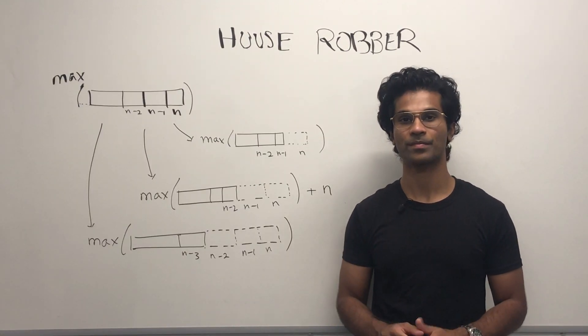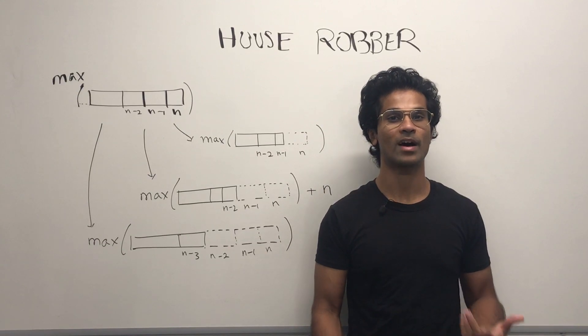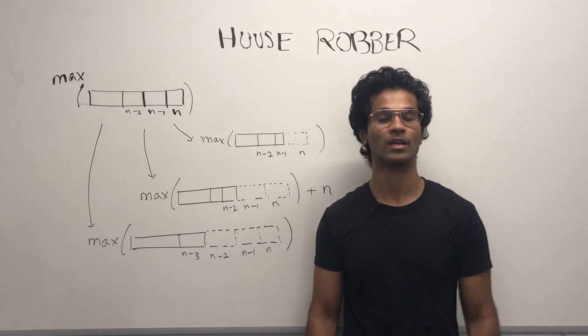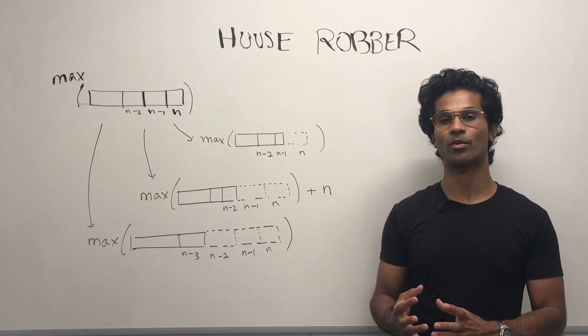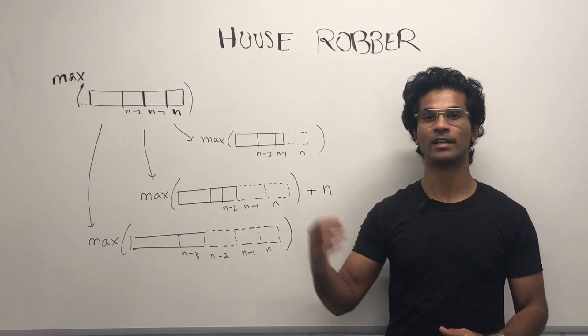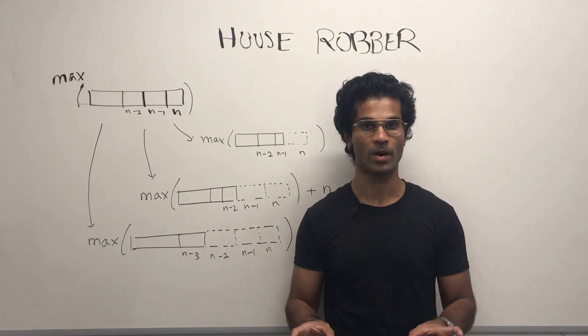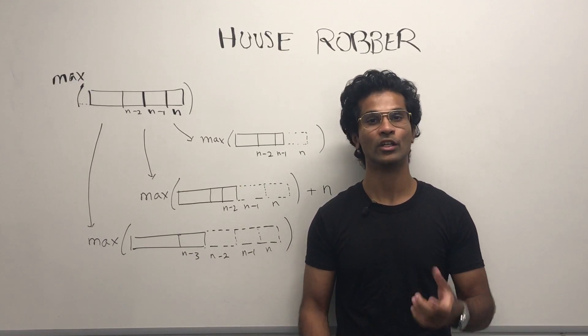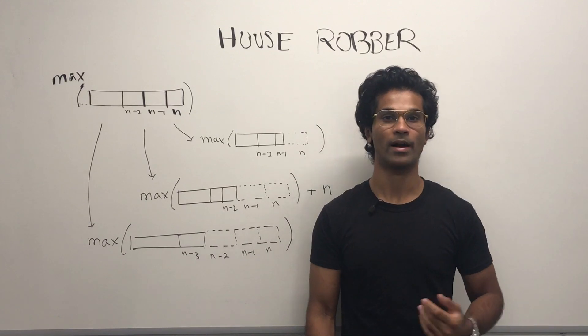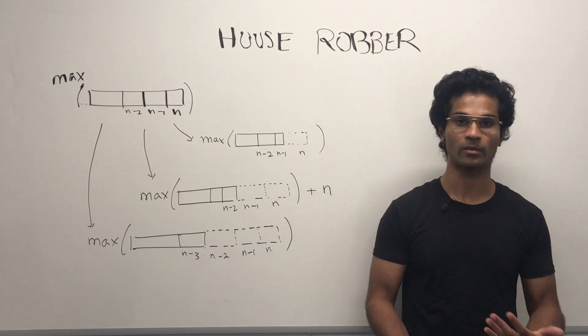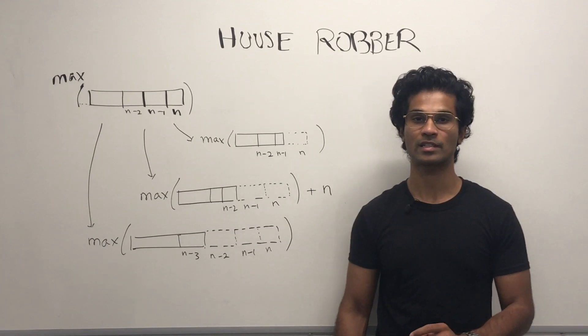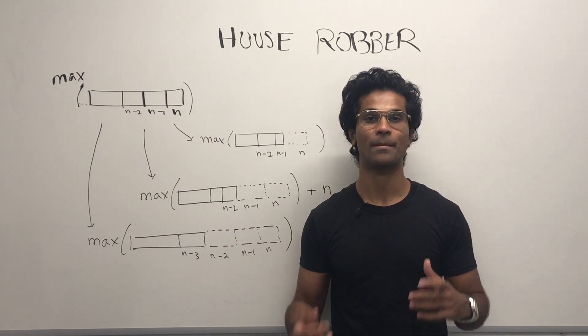Here are some subproblems. The original question is asking us the maximum score if we have an array of length n. Now, to make the subproblems, what we have to do is take the original question and make it smaller somehow. In this case, it makes sense to ask the question again using a smaller array by ignoring one element or two elements or three elements. Let's see what makes sense and what we can do to make it maximal.